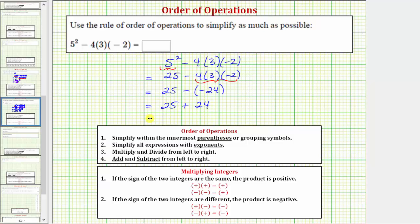For our last step, there's one operation left. 25 plus 24 equals 49. So the given expression simplifies to 49, or we can say has a value of 49.